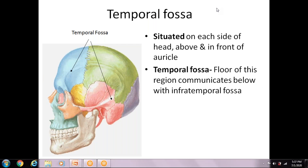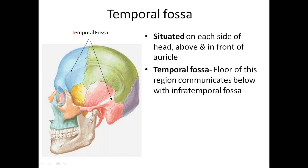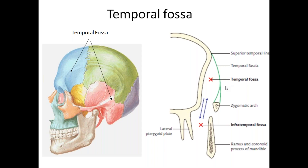The temporal fossa is situated on each side of the head, above and in front of the auricle. This is called the temporal region, and the temporal fossa is the floor of this region. The temporal fossa communicates below with the infratemporal fossa, which is below the temporal bone, medial to the ramus of the mandible. In coronal section, you can see the temporal fossa communicating with the infratemporal fossa through a gap. The temporal fossa is limited above by the superior temporal line.